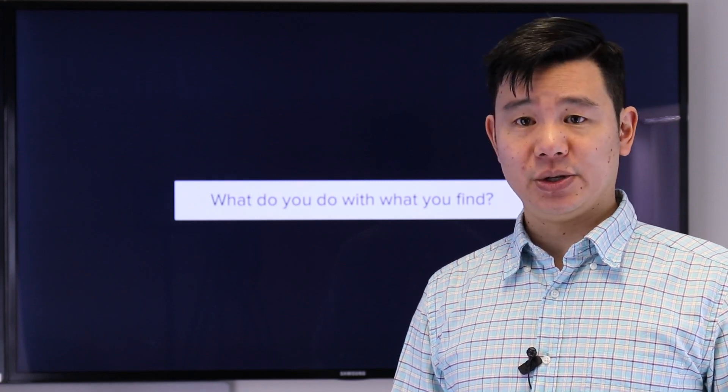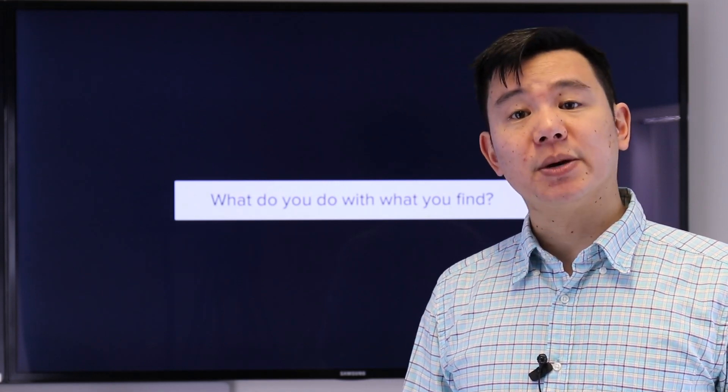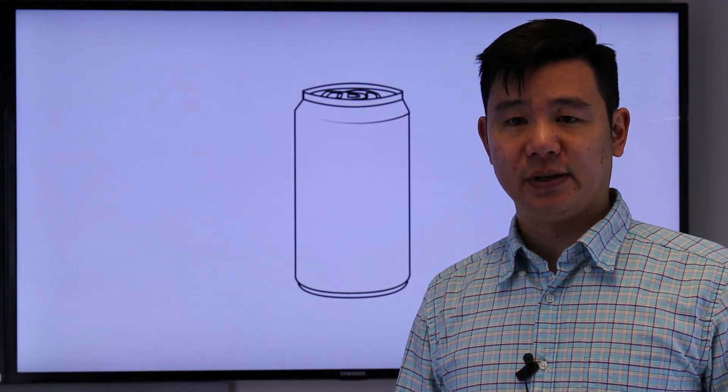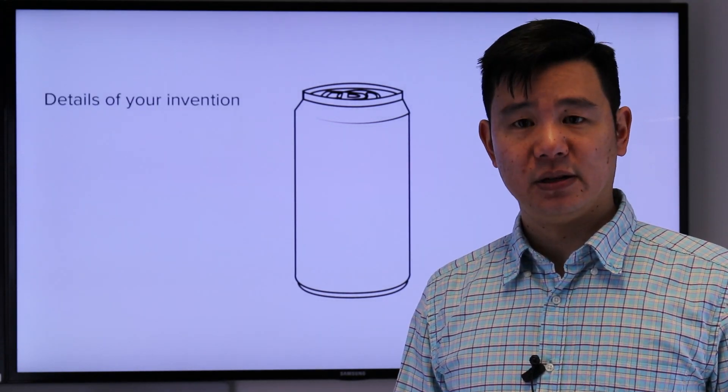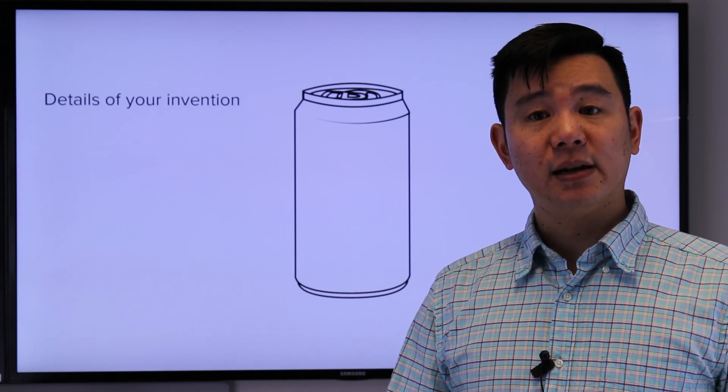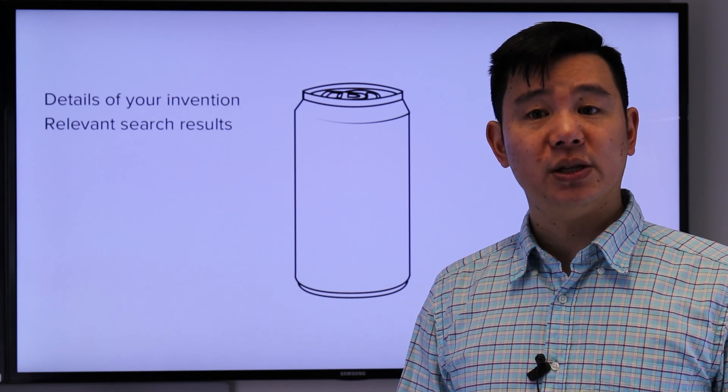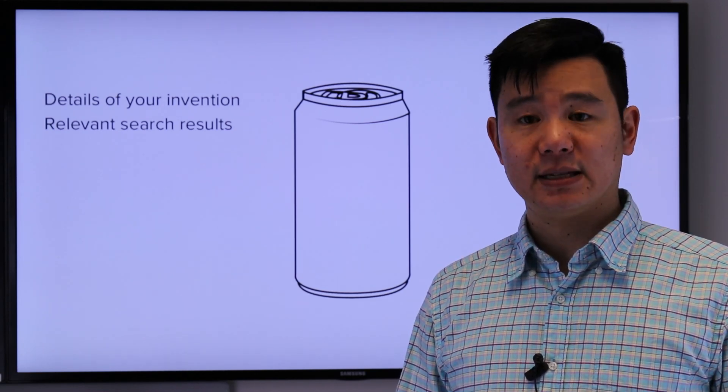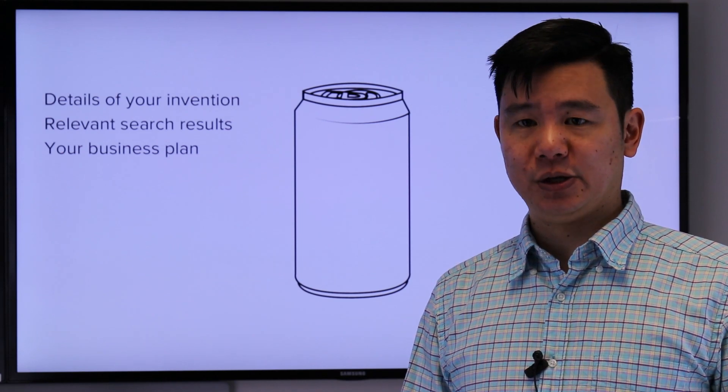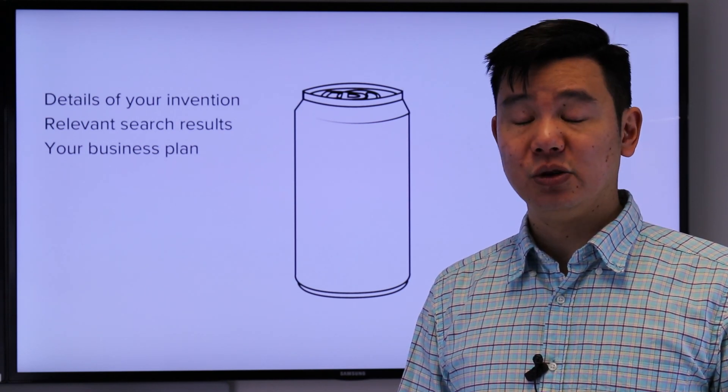So hopefully I've given you enough to start your own patent searches. But then, what do you do with what you find? To put it into context, these search results are going to be useful when you meet with your patent attorney. To get the most out of this meeting, you want to take a number of things. Firstly, take all the details about your invention. This will give your attorney the best understanding of what your invention is all about. Take along your search results, all the things you think are relevant. This will give your attorney a head start to understand what your industry looks like and how your product fits in that landscape. Finally, take along your business plan. Your patent is only one part of your overall business operation. By looking at your business plan, your attorney will be able to give you advice to best meet your business expectations and your business objectives.